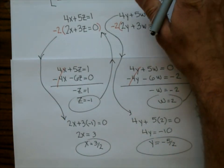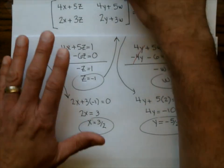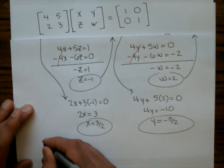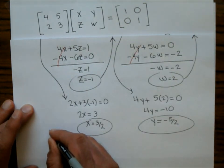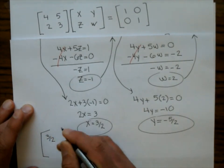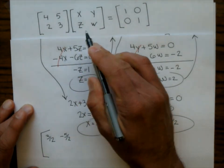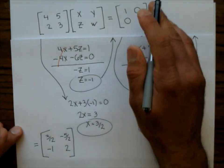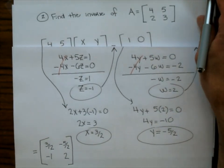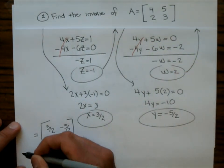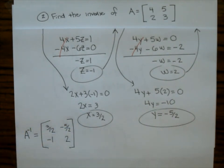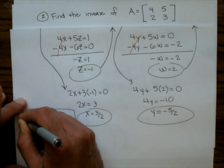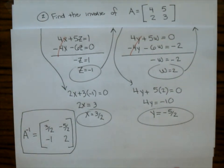So I've found x = 3/2, y = −5/2, z = −1, and w = 2. Writing those as the inverse matrix, A⁻¹ equals [3/2, −5/2, −1, 2]. The inverse has special notation — you write A with a little negative 1 exponent. It doesn't mean 1 over A; it means this is the inverse of matrix A. We'll show an example at the end of how this helps with cryptography.